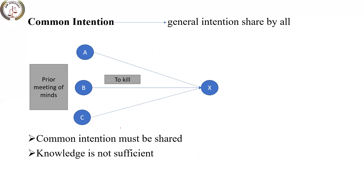Now, what is common intention? It is a general intention shared by everyone together. Some people make a plan. Common intention means that persons share an intention to commit an offense and they all have made that plan together. A prior meeting of minds is very important — the intention must be shared by all. For example: A, B, and C pre-meditate that they will kill X. This is common intention — you share your intention for a particular act.